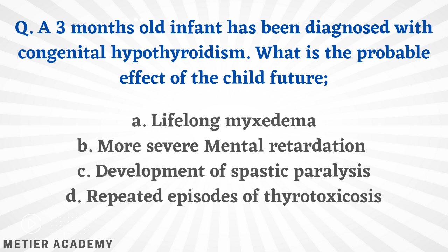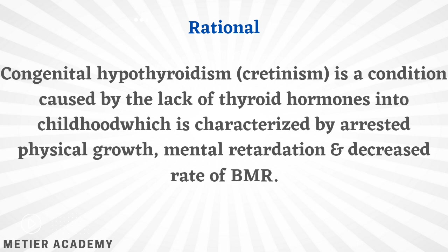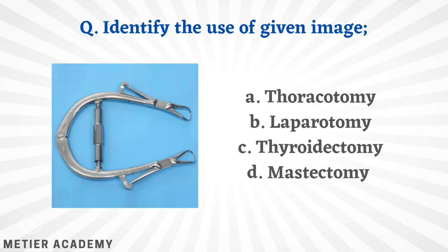Next: a three-month-old infant has been diagnosed with congenital hypothyroidism — what is the probable effect on the child's future? Options: lifelong myxedema, more severe mental retardation, development of spastic paralysis, or repeated episodes of thyrotoxicosis. The correct answer is option B, more severe mental retardation. Congenital hypothyroidism, also called cretinism, is caused by lack of thyroid hormones in childhood and is characterized by arrested physical growth, mental retardation, and decreased BMR.